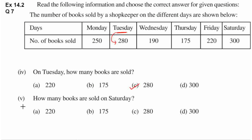Fifth question: how many books are sold on Saturday? Saturday yahaan per mentioned hai. Saturday kitni books sell hoi hai? 300. 300 yahaan mentioned hai D option mein, so D is the correct answer.